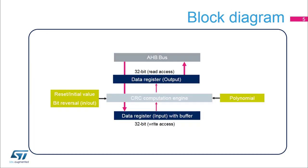The CRC peripheral is connected to the AHB bus interface for optimal performance. It contains a single 32-bit register, which is used for both writing and reading by either the CPU or DMA peripheral. The initial value, input-output bit reversal, and polynomial coefficients are configured by the software during the initialization phase before starting a new CRC calculation.